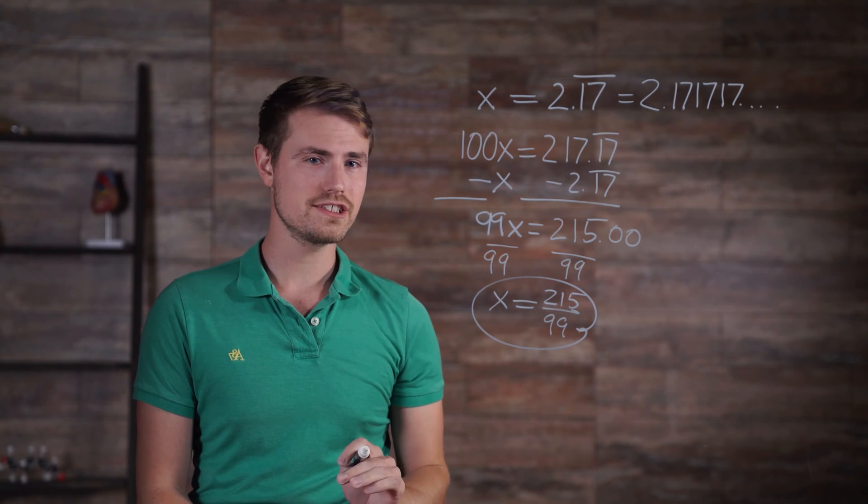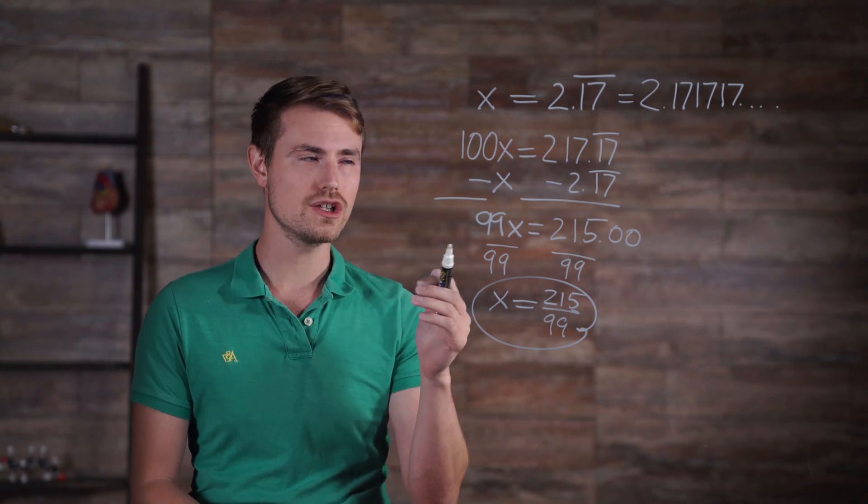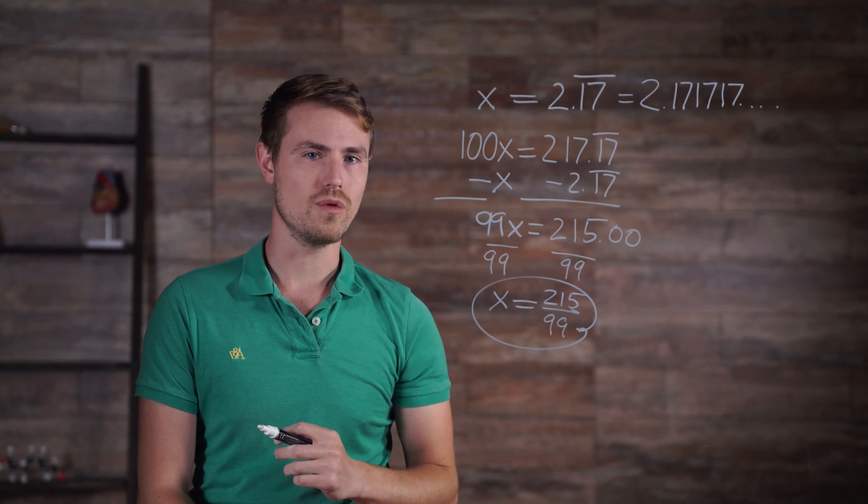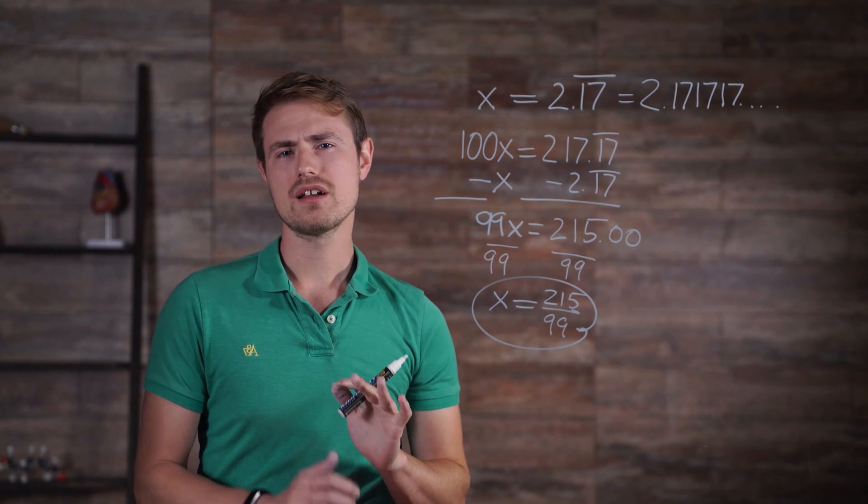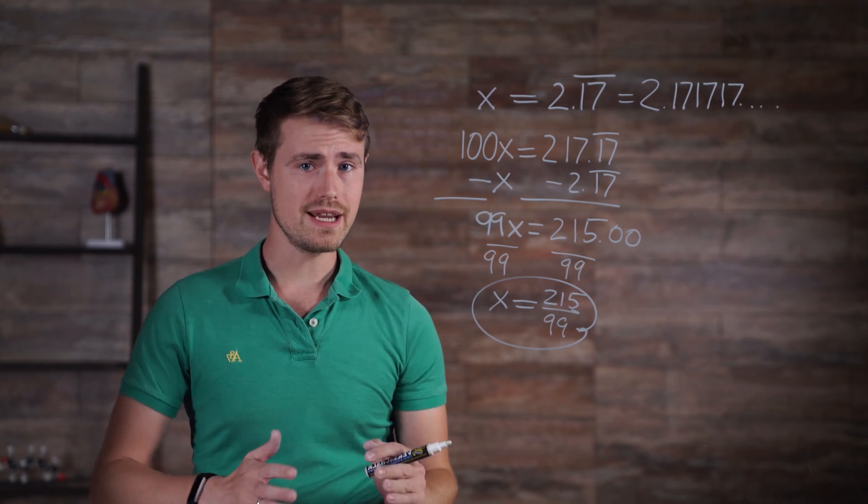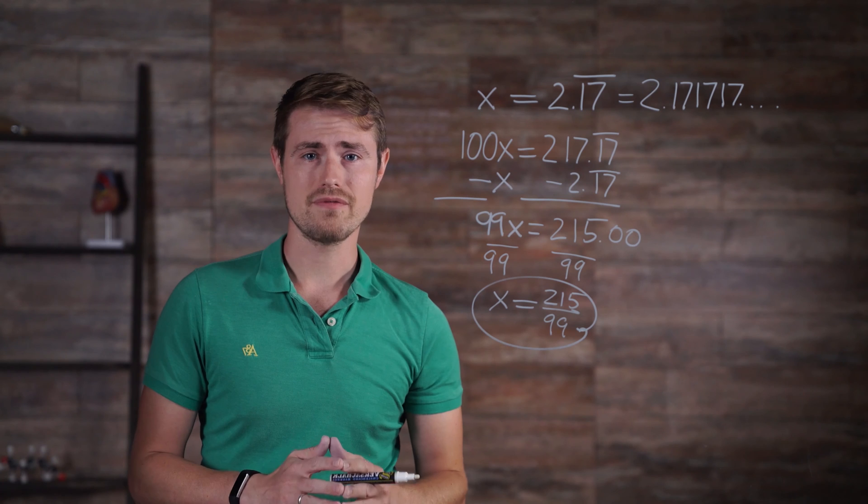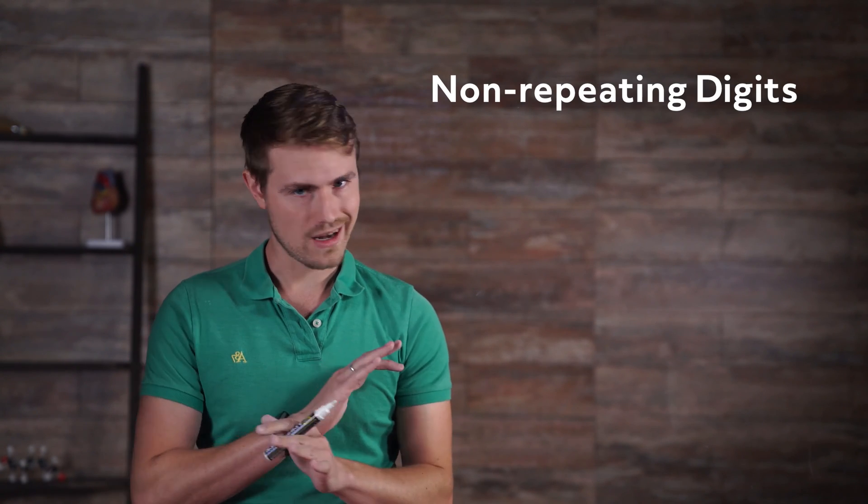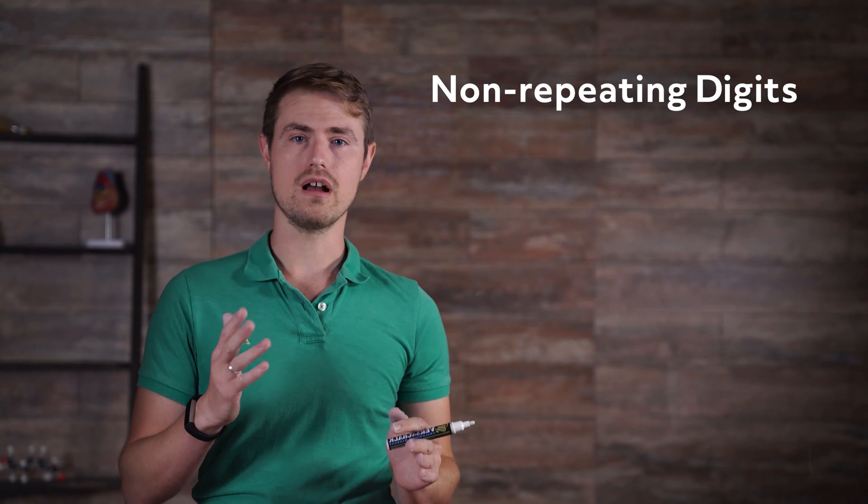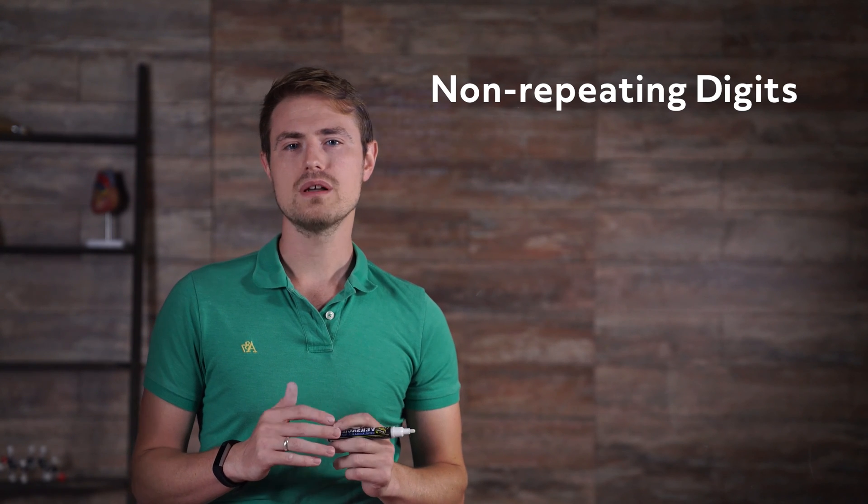If you plug this into your calculator, you will get something close to, probably rounded, 2.17 repeating. It is important to note that not all decimals are repeating. Some decimals have an infinite number of non-repeating digits and therefore cannot be expressed as a fraction of integers. These types of real numbers are classified as irrational.